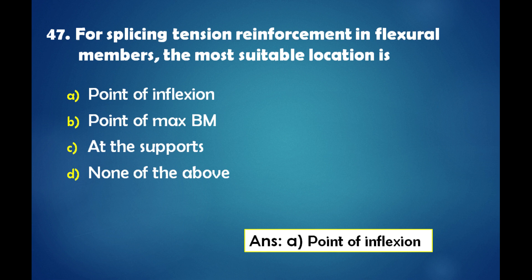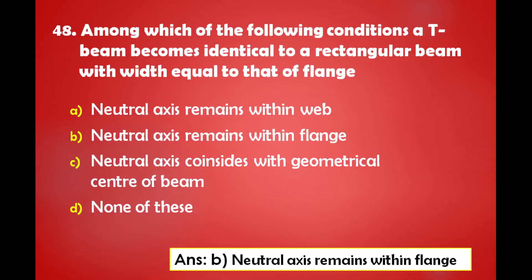For splicing tension reinforcement in a flexural member, the most suitable location is: a) point of inflection, b) point of maximum bending moment, c) at the supports, d) none of the above. The answer is: the most suitable location is at the point of inflection.